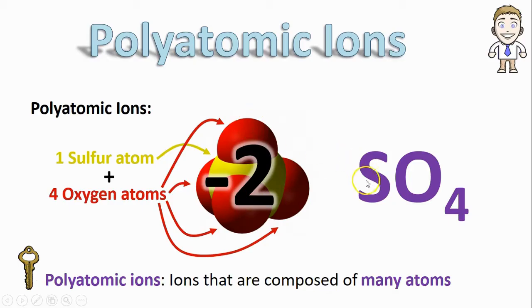So for this particular ion, it would be SO4 because there's one sulfur and four oxygens. The charge would also be written in the upper right hand corner, just like normal.